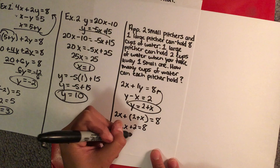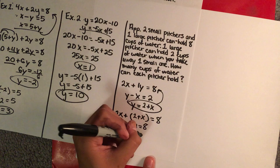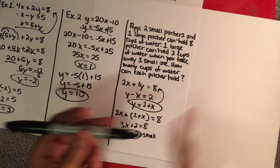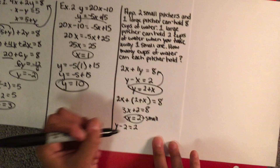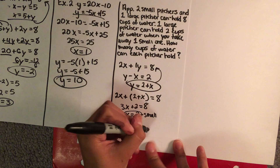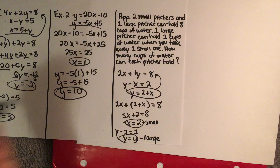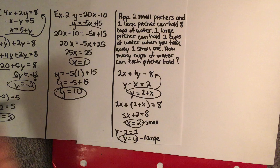You add like terms: 2x plus 1x gives 3x plus 2 is equal to 8, so x is equal to 2 — that is the small pitcher. You plug this into either equation: y minus 2 is equal to 2, so y is equal to 4 — that is the large pitcher. Your small pitcher can hold 2 cups of water and your large pitcher can hold 4 cups of water. And that is how you solve a system of equations using substitution.